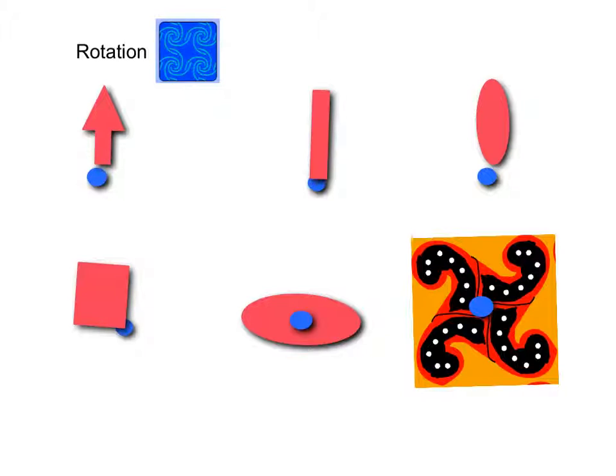Rotation is also used in Kaleido Paint. Rotation works by going around the origin and rotating around it, like that.